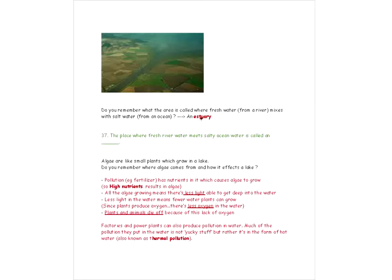An estuary is an area where fresh water from a river mixes with salt water from an ocean. The place where fresh river water meets salty ocean water is called an estuary.